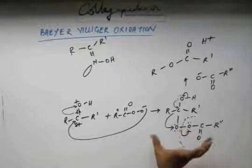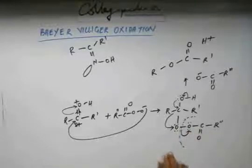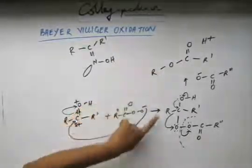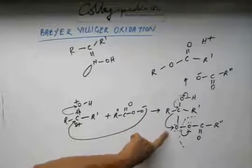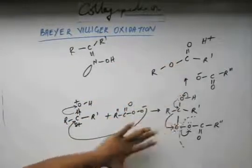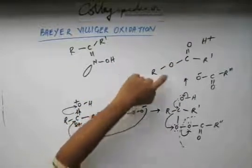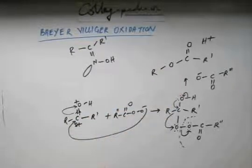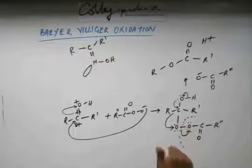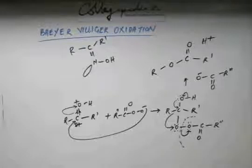So whichever group has greater migratory aptitude, that group will migrate. In this case I migrated R, so oxygen has been inserted between R and the carbonyl group. But if R dash has greater migratory aptitude, then after rotation R dash will come here and R dash will migrate, not R. So whichever group has greater migratory aptitude, oxygen will be inserted between that group and the carbonyl group. This is how the reaction occurs.